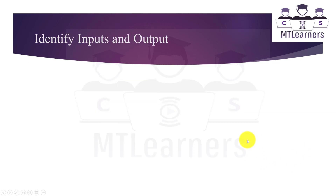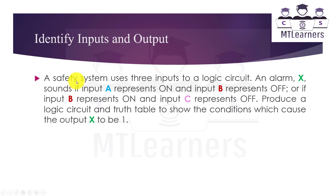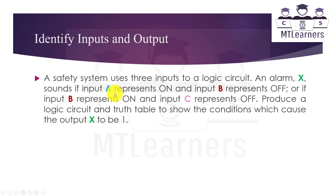Here you can see that X is highlighted as green, A as blue, B as red, and C as purple. So an alarm X sounds, which means X is the output. Input A means A is an input, and B is also an input.